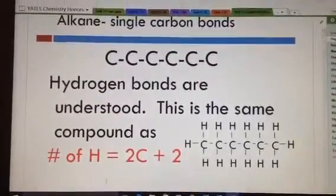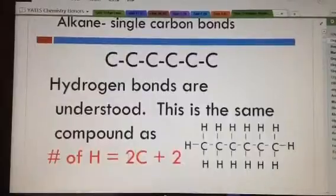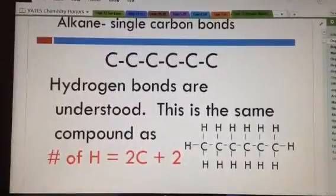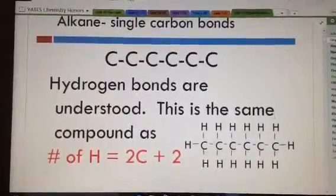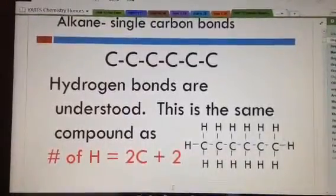To figure out how many hydrogens it would be, it would be two times six, which would be 12, plus two is 14. And you can see in this diagram in the bottom right hand corner that there are 14 hydrogens.